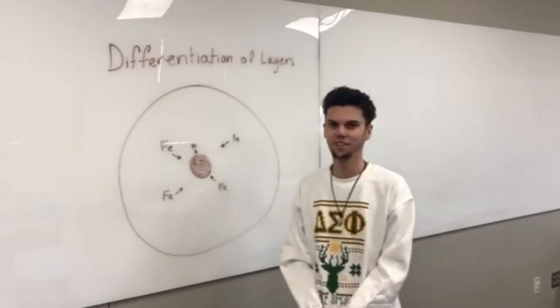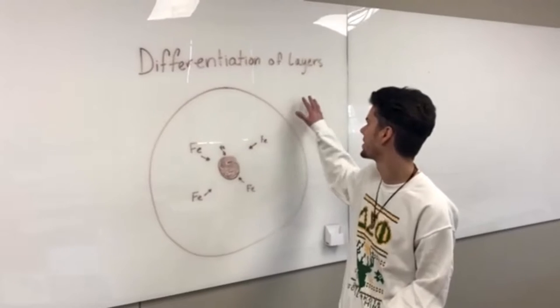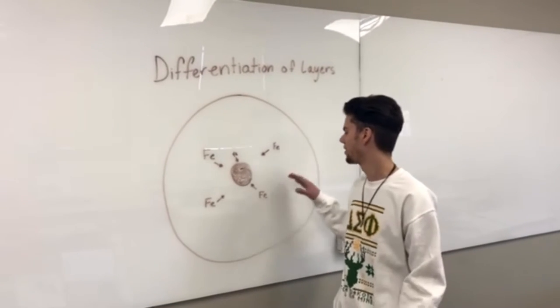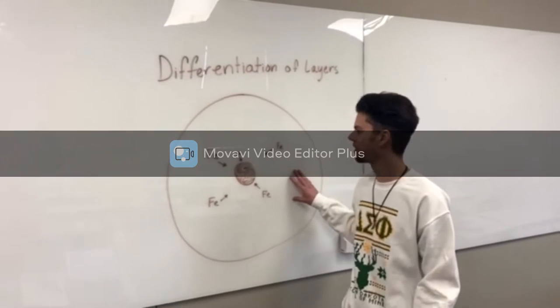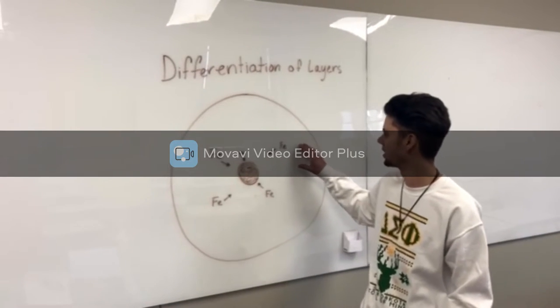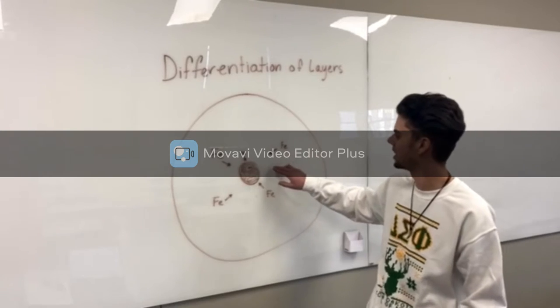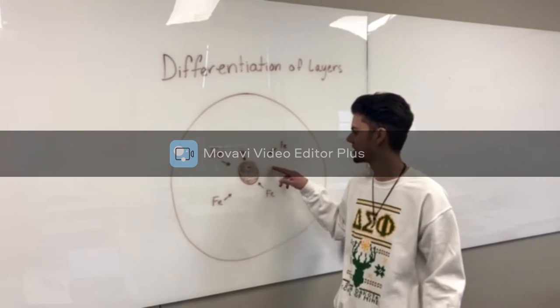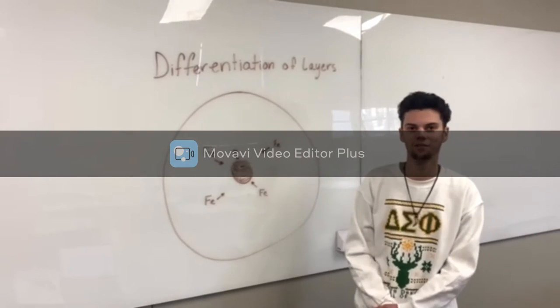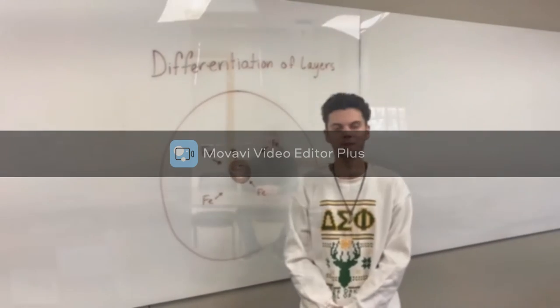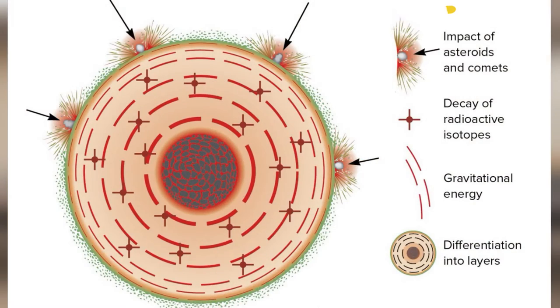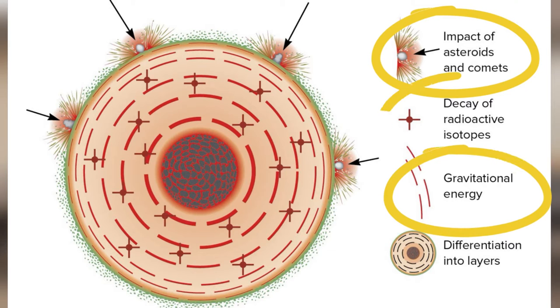With the formation of the Earth, we now have the differentiation of layers of the Earth. With the heat of the Earth, liquid iron was able to slowly sink, because of its density, towards the center of the Earth and form its core that we know today. The Earth's energy comes from three main sources: impact energy, gravitational energy, and the ongoing decay of radioactive isotopes.